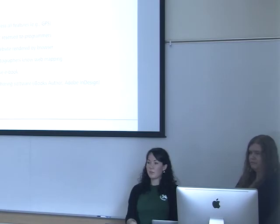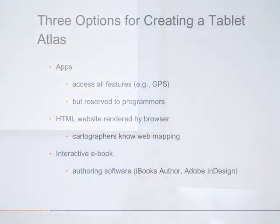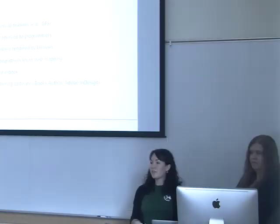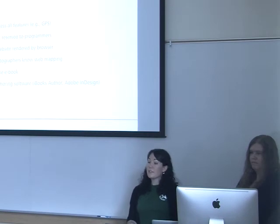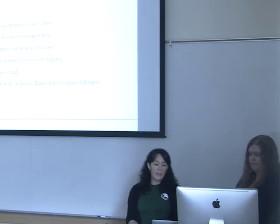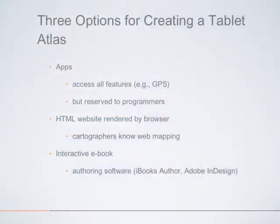Another option is creating an HTML website rendered by a browser, which is more accessible because more people can write HTML than a specific programming language. The downside is that as the author you need to understand the principles of creating a map specifically for the web, which differs from creating a traditional paper map. The last option currently available is the interactive eBook, using an authoring software such as iBooks Author, or Adobe InDesign's recently produced authoring software — and this is the option we opted for.